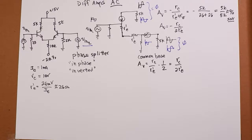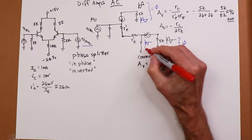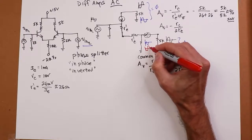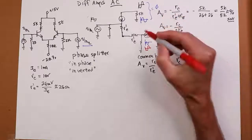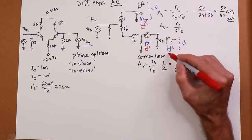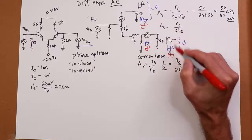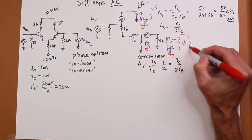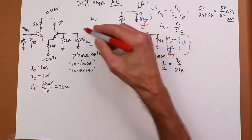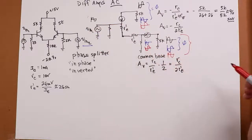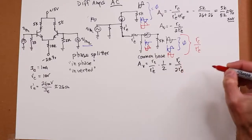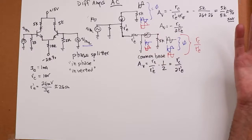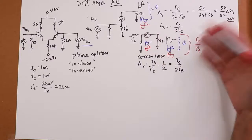If the two inputs are identical, they cancel — you get nothing, a big fat zero. But if the second base is flipped — inverted phase — the blue contributions are also flipped, so now they add together and we get twice the output. If the two inputs are in antiphase, the net gain is RC over R'E rather than 2R'E, because the two signals add and we get double.